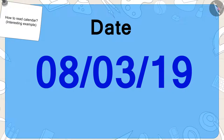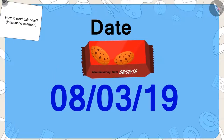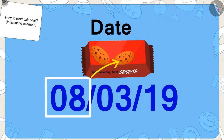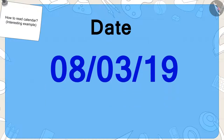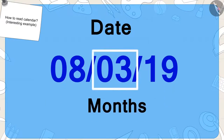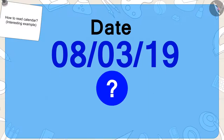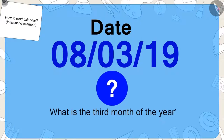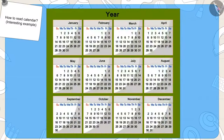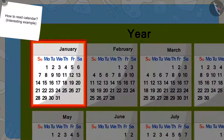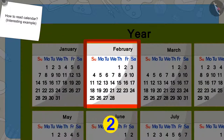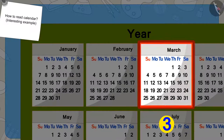Like, what date is mentioned on the packet of biscuits bought by Golu? Exactly — eight. Now, this number shows the number of the month. Children, can you tell what is the third month of the year? Let's find it in the calendar. This is the first month of the year — January. This is the second — February. And March is the third month.